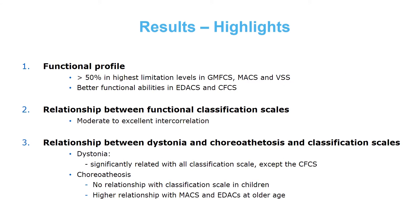Here are some highlights of the results. First, for functional profile, we found that over 50% of the participants exhibited the highest limitation levels in GMFCS, MACS, and Viking Speech Scale. Better functional abilities were seen in EDACS and CFCS. Second, we found a moderate to excellent relationship between functional classification scales. Third, there was a significant relationship between dystonia and classification scales, except for the CFCS. Fourth, for chorioathetosis, there was no relationship with classification scales, except for the MACS and EDACS at older age.